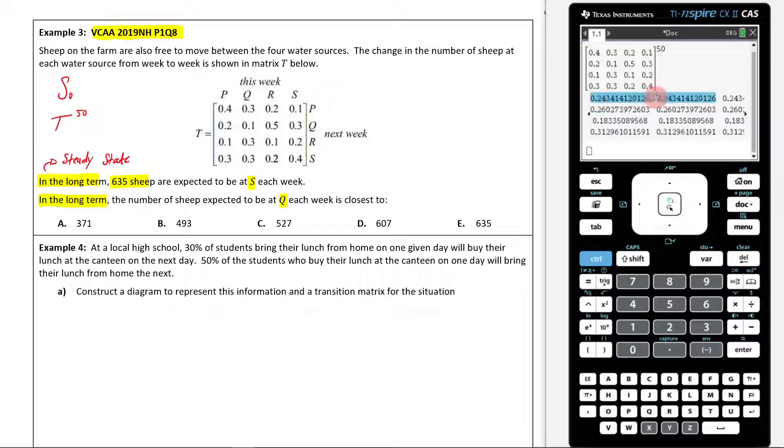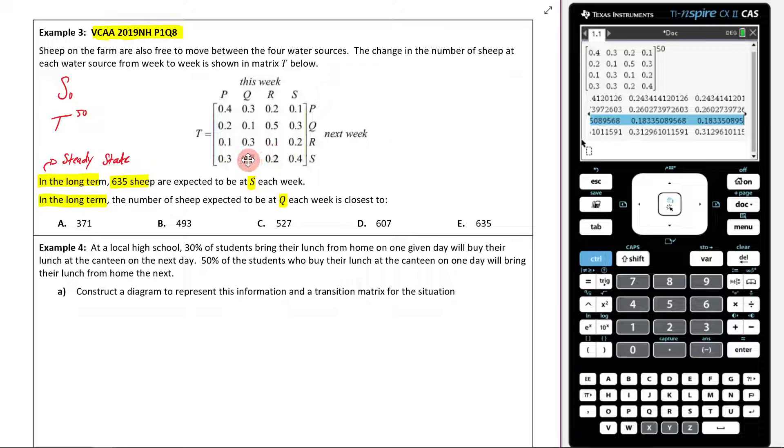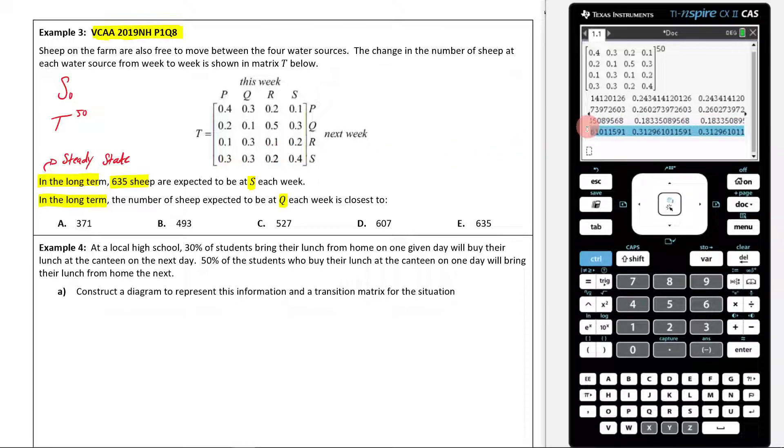As you can see, 0.24, 0.24, 0.24, 0.24, the amount of sheep in Q. So my next row, 0.26, 0.26, 0.26, 0.26, the amount of sheep in R, 0.18, 0.18, 0.18, 0.18. The amount of sheep in S, 0.31, 0.31. Hopefully you can see we know that we've hit the steady state here because we have consistent numbers across all the rows.